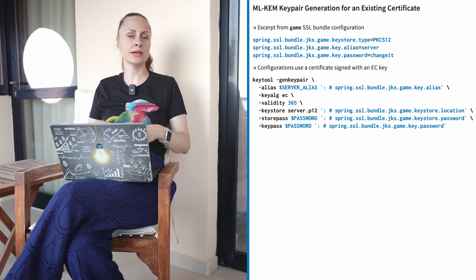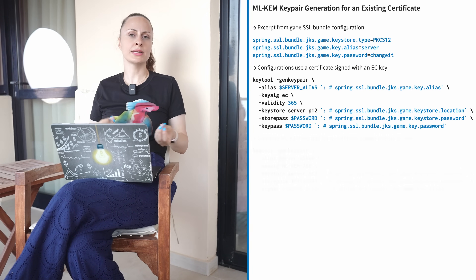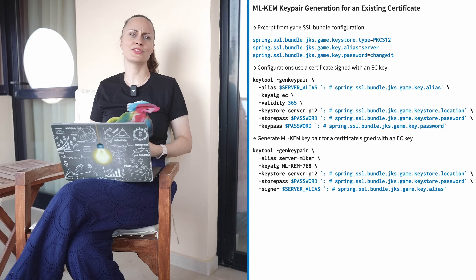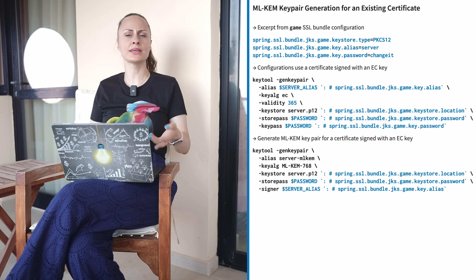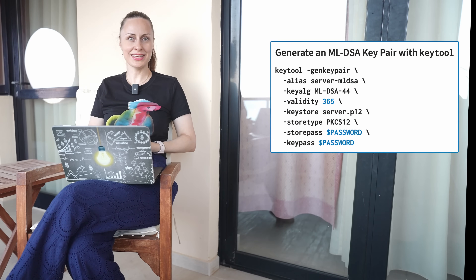When transitioning to post-quantum cryptography, you may use a hybrid approach for the key exchange algorithms. In the case of Java applications, this means ensuring that certificates and private keys, which are typically stored in key stores, are compatible with these new cryptographic methods. For example, if you have created a certificate signed with an EC key, you can also use KeyTool to generate an ML-KEM key pair for it. ML-KEM itself is not a signature algorithm, and thus you cannot use it to sign the certificate containing the ML-KEM public key. To address the need for quantum-resistant digital signatures, JDK 24 also introduced the module lattice-based digital signature algorithm. As in the case of ML-KEM, you can use KeyTool to obtain an ML-DSA key pair for it. To conclude, ML-DSA is used for authentication, while ML-KEM serves to derive the shared secret used later with KDF and AEAD to produce the master secret.